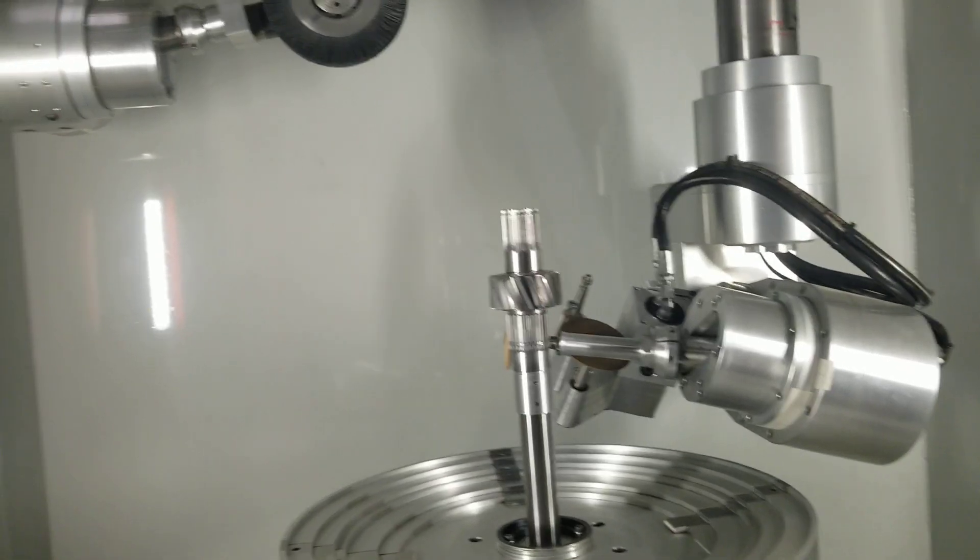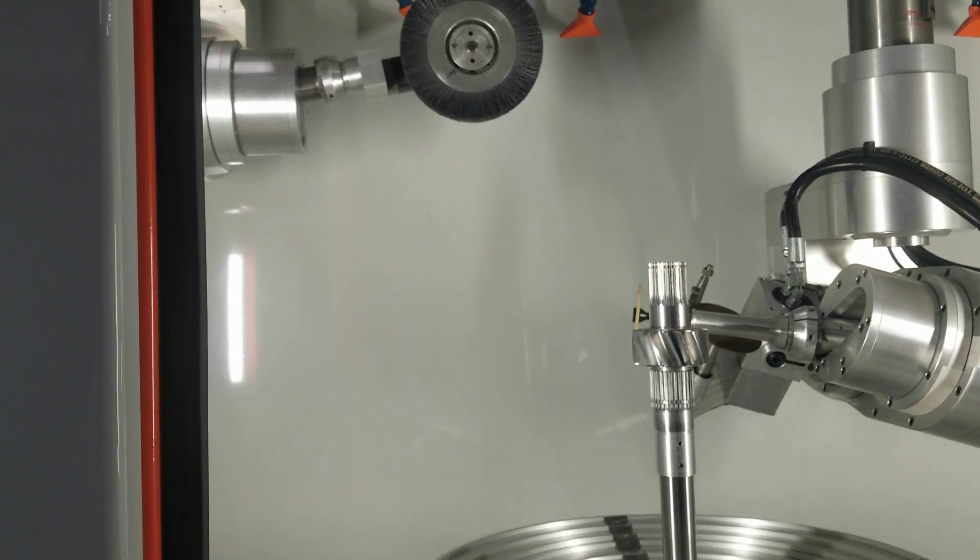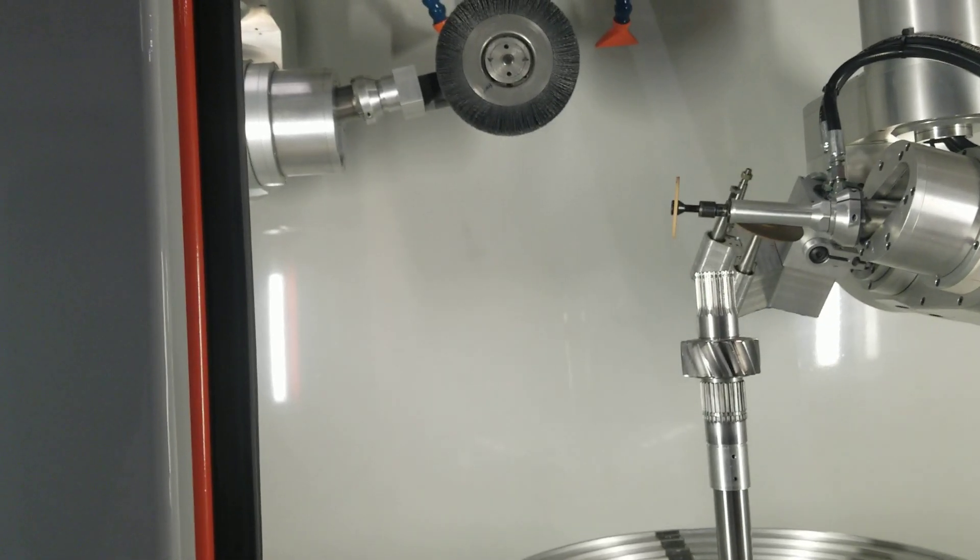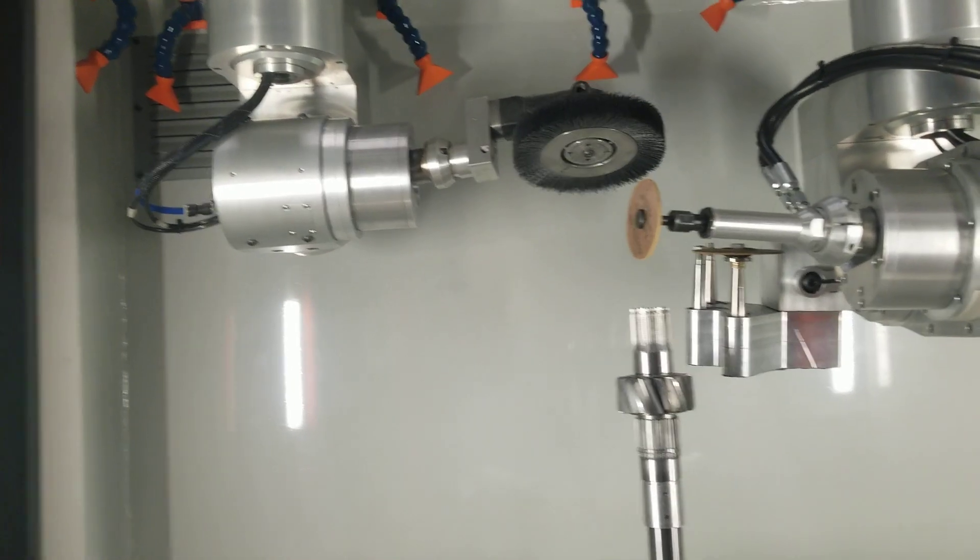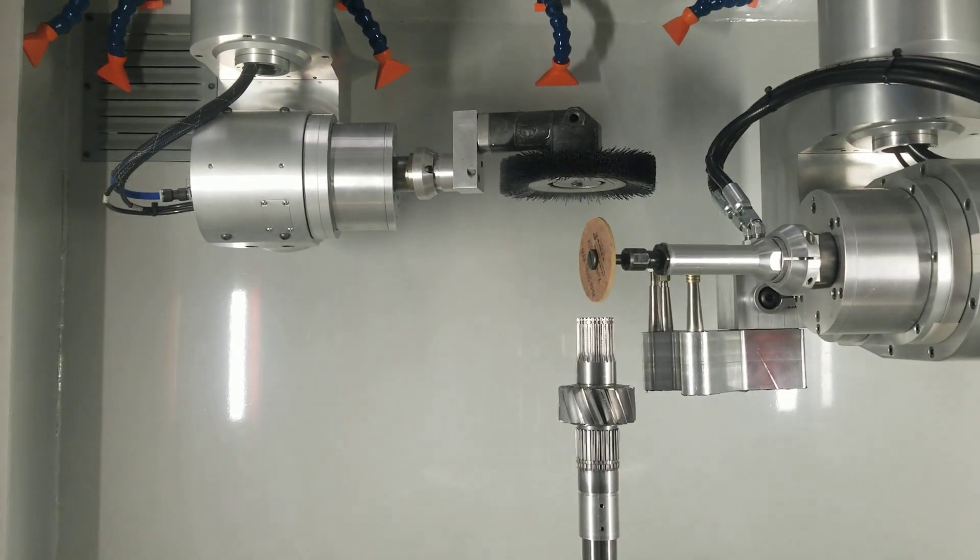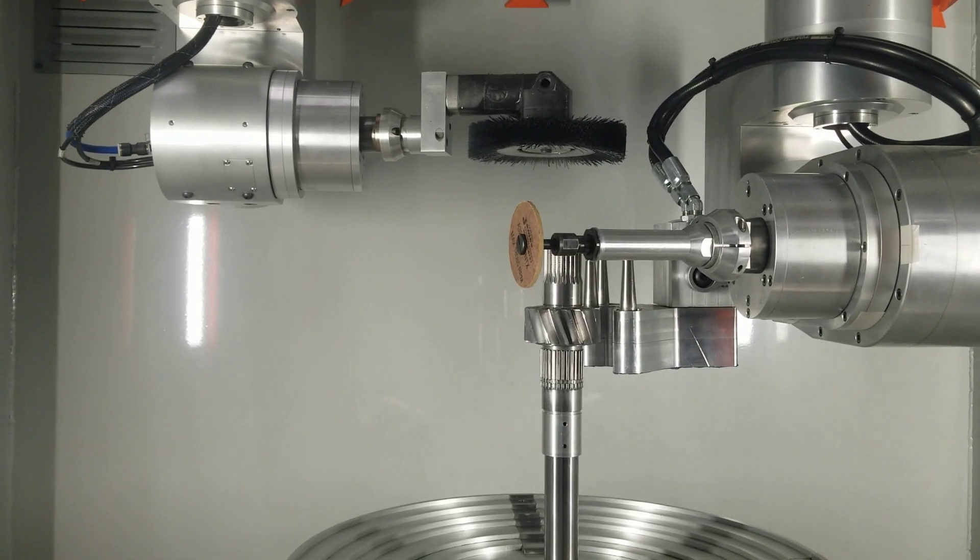This would be the grinding at the bottom. Now, we don't just want to do the grinding of the tooth. We want to do the whole darn part. So now we're doing a snap ring.